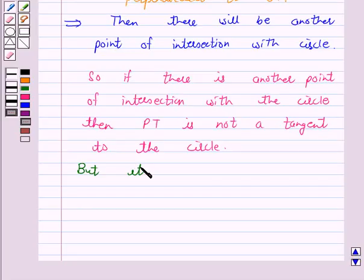But it is contrary to our assumption, because we have assumed that PT is a tangent to the circle.